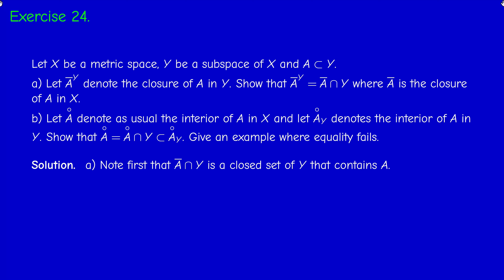We have something similar but a little bit different about the interior. So the interior of A, A°, is the biggest open set contained in A — the biggest open set in X contained in A. And A°_Y is the interior of A in Y, meaning the biggest open subset of Y contained in A. We have to prove that A° equals A° intersected with Y, and this set is contained in the relative interior of A in Y. We also need to give an example where equality fails.